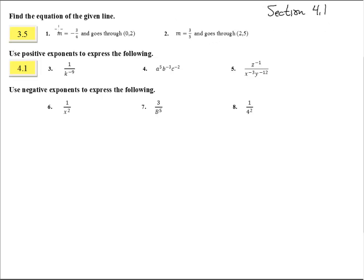Here we are in section 4.1 with the answers to numbers 1 through 8. Find the equation of the line — we have two ways of doing that. We can either do y equals mx plus b, or ax plus by equals c. This is called slope-intercept form because there's the slope and there's the y-intercept. And ax plus by equals c is standard form. You can do either one of them, so we'll do one of each.